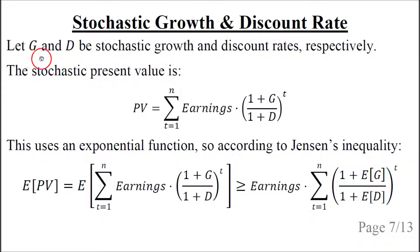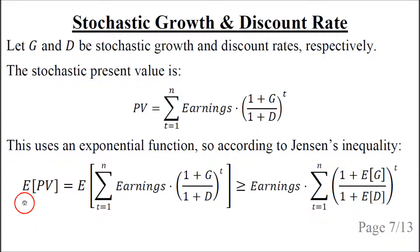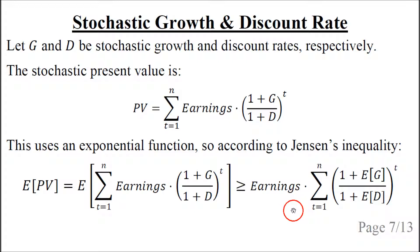Now let capital G and capital D both be stochastic growth and discount rates. The present value is defined with a stochastic growth rate and a stochastic discount rate. Once again, we have an exponential function raised to the power of T, so Jensen's inequality holds. The actual mean present value is greater than or equal to the estimated mean present value calculated from the mean growth rate and the mean discount rate.